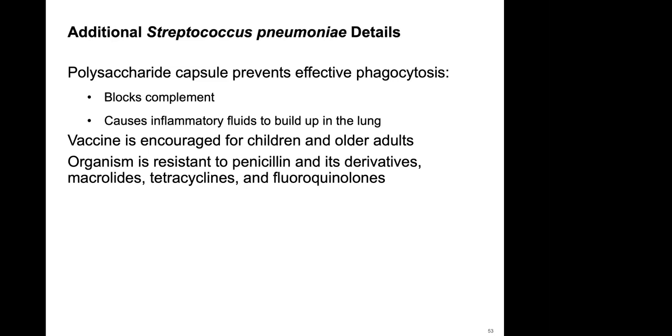The vaccine for Streptococcus pneumoniae is encouraged for children and older adults. Streptococcus pneumoniae is also a cause of certain types of meningitis, as discussed in the prior chapter.